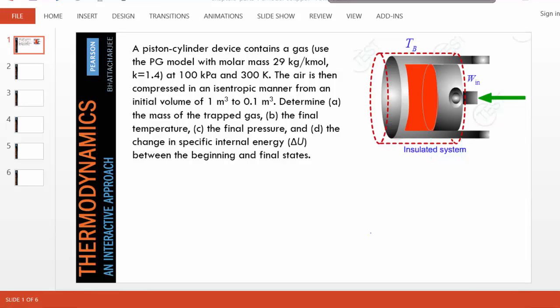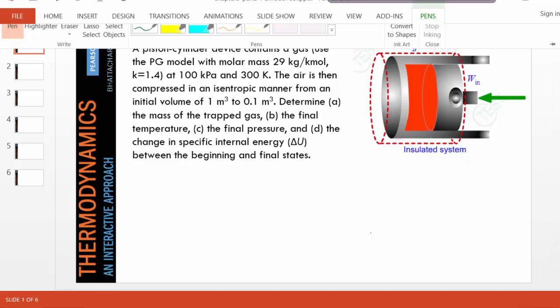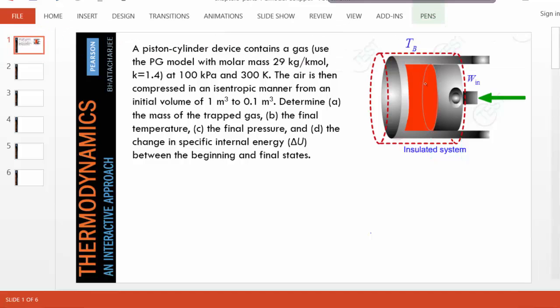This problem illustrates the use of the PG model. In this problem, a gas is being compressed inside a piston cylinder device in an isentropic manner. Isentropic manner means entropy remains constant.